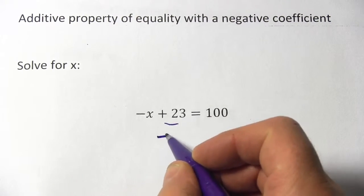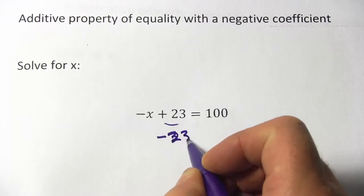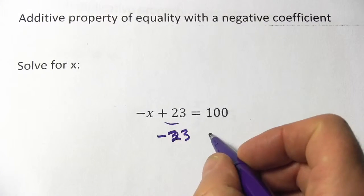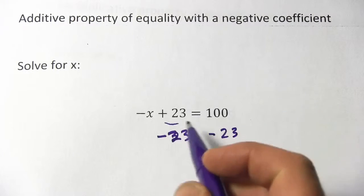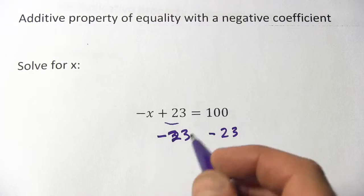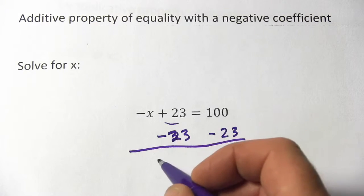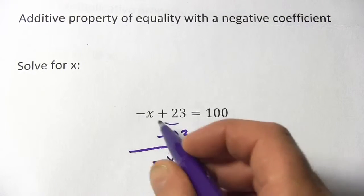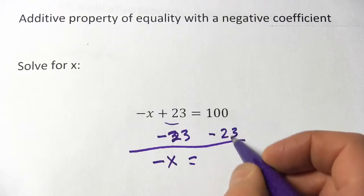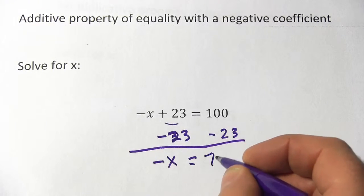We're going to get rid of it by doing the opposite so we're going to write minus 23 and because we want to keep the equation balanced we have to do that on the other side of the equal sign too. So positive 23 minus 23 is just 0, we won't even write it, we'll just write negative x and 100 minus 23 is 77.